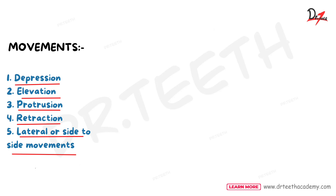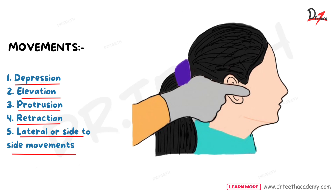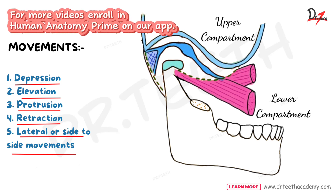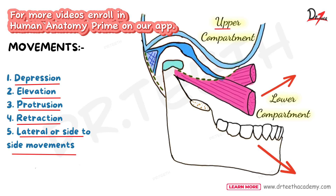If you want to feel the movements of your TMJ, place your finger at the pre-auricular area or into the external auditory meatus. The movements of the joint can be divided into upper and lower compartment movements. Upper compartment movement occurs between the upper articular surface and the articular disc; lower compartment movement occurs between the disc and the head of the mandible. In forward movement, the movement occurs in the menisco-temporal compartment (upper compartment). When you open your mouth slightly, movement happens in the lower compartment, but if you open your mouth wide, the movement happens in the upper compartment.